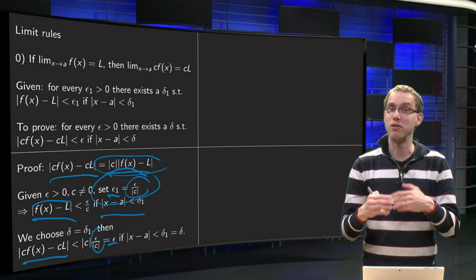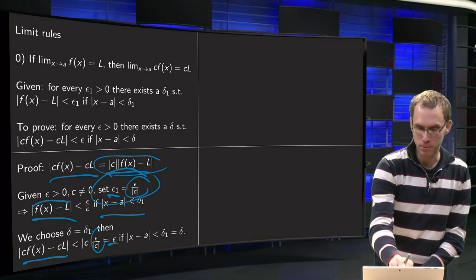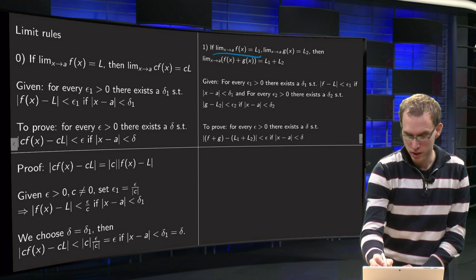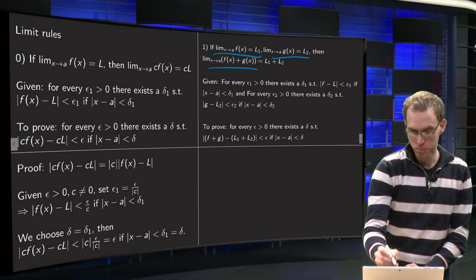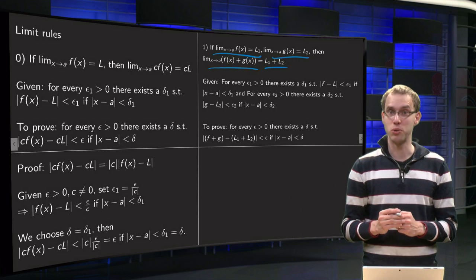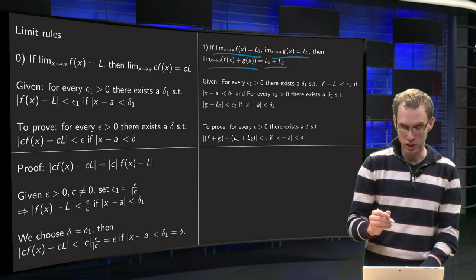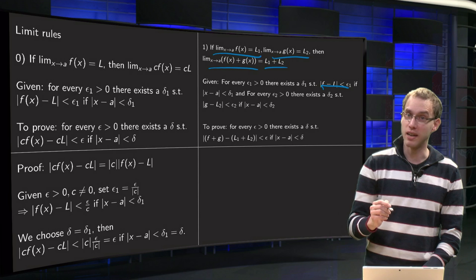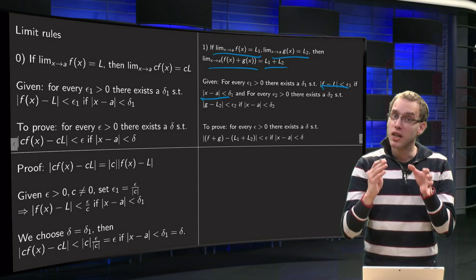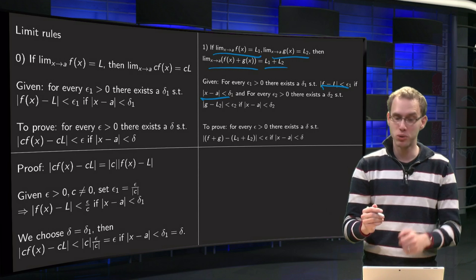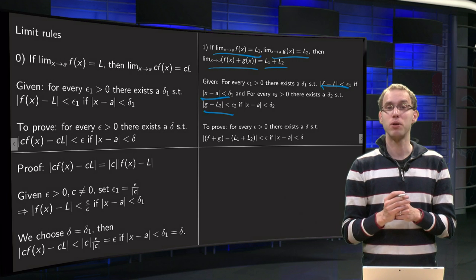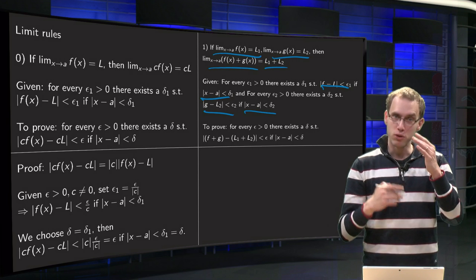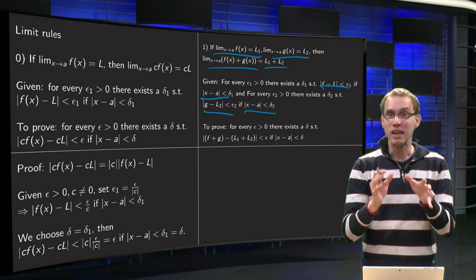So let's do a second example which goes similarly: the sum rule. Given that f converges to L₁ and g converges to L₂, we have to show that the sum rule holds — that f + g converges to L₁ + L₂. What is given? f goes to L₁ as x approaches a, so |f − L₁| can be made smaller than ε₁, provided x is close enough to a. Similarly, |g − L₂| becomes arbitrarily small provided x is close enough to a. Note that δ₁ and δ₂ do not need to be the same values — they are two separate limits.